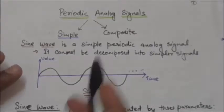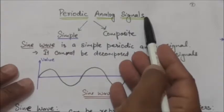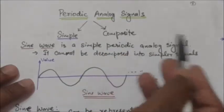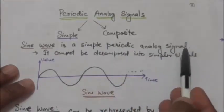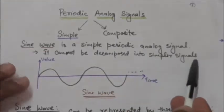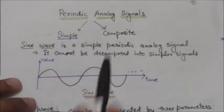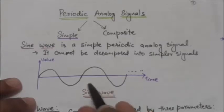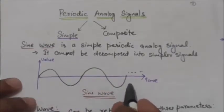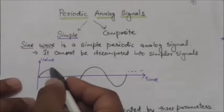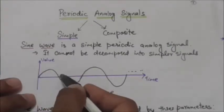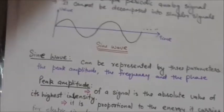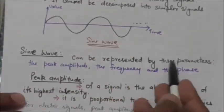Hello friends, welcome back. In this tutorial we will study about simple periodic analog signals. Periodic analog signals can be classified as simple or composite. A sine wave is a simple periodic analog signal — it cannot be decomposed into simpler signals. Each cycle of the sine wave consists of a single arc above the time axis followed by a single arc below the time axis.